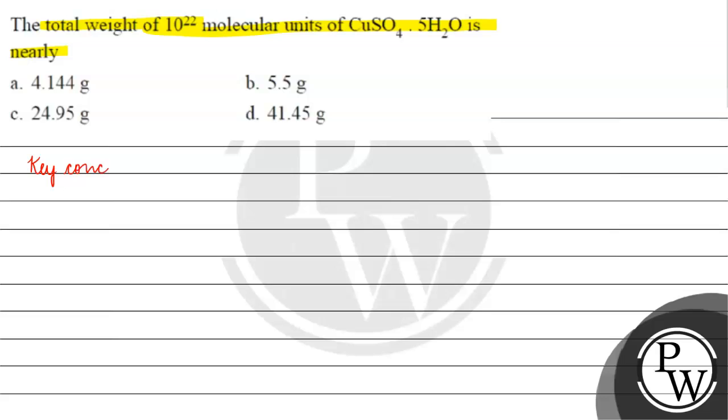The key concept for this question is number of moles. Number of moles basically equals mass by molar mass and is also equal to number of elementary entities, which can be atoms, molecules, or ions, divided by Avogadro's number, which is 6.022 × 10^23 mol^-1.